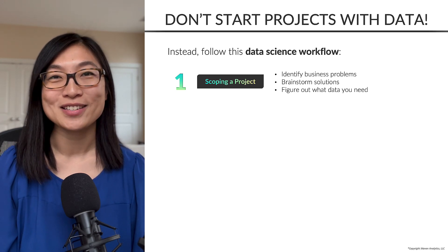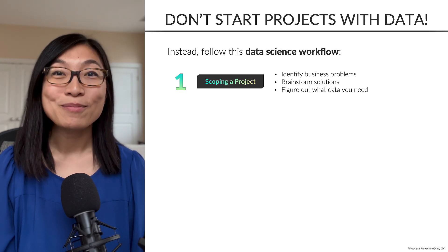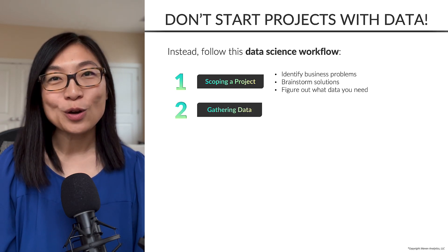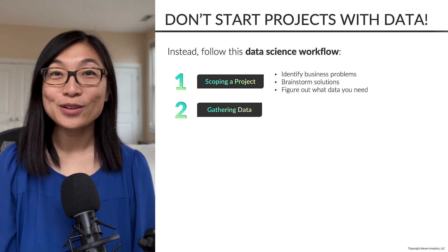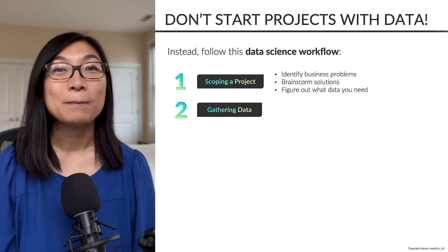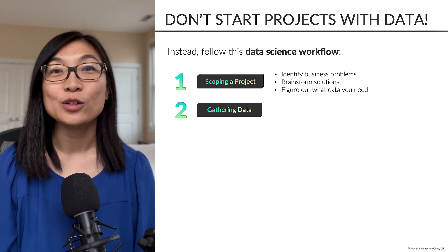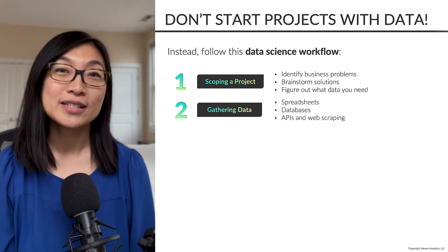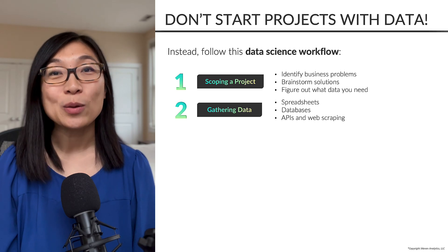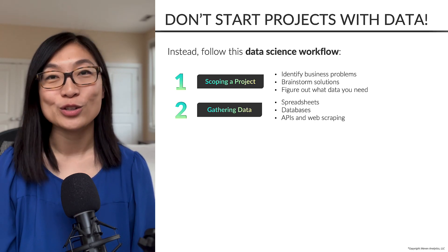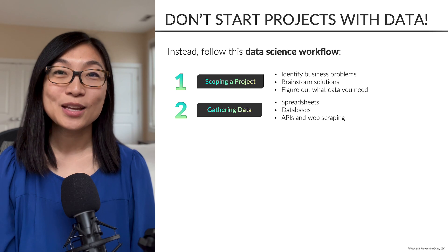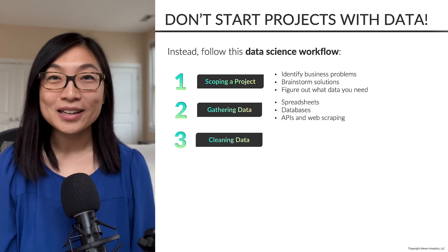The next step after scoping is to gather data. Based on what data you scoped, you can gather it through a variety of methods. As a data scientist, maybe you decide to get it from a spreadsheet or a database, you can also get it through an API, or scrape a website — there are just tons of options.